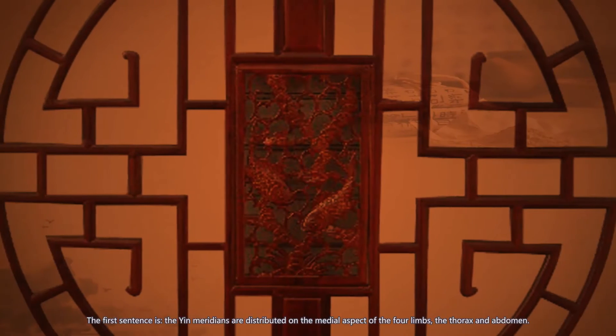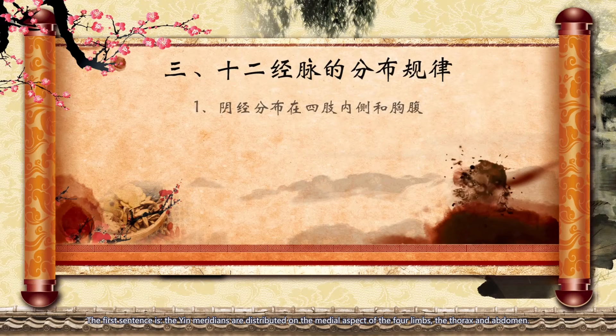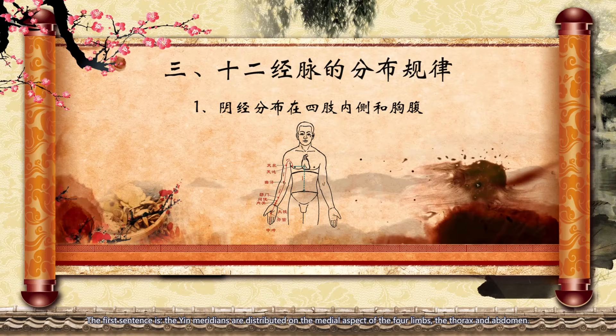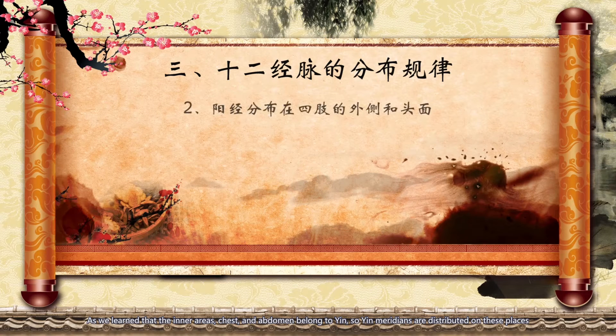Then, what are the rules of distribution of the twelve regular meridians? First, the distribution pattern on the body surface can be summed up in three sentences. The first sentence is: the yin meridians are distributed on the medial aspect of the four limbs, the thorax and abdomen. As we learned, the inner areas, chest and abdomen belong to yin, so yin meridians are distributed on these places.